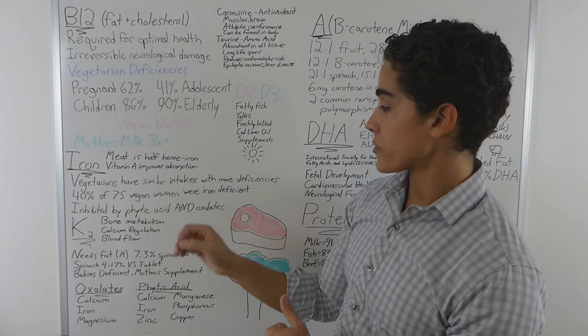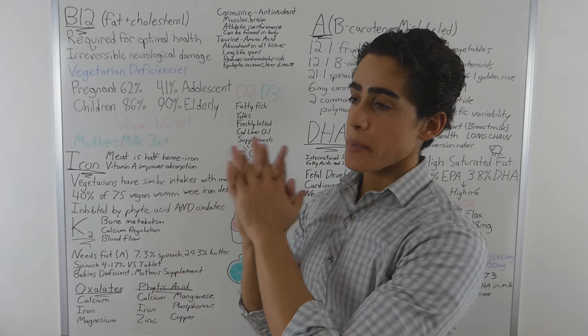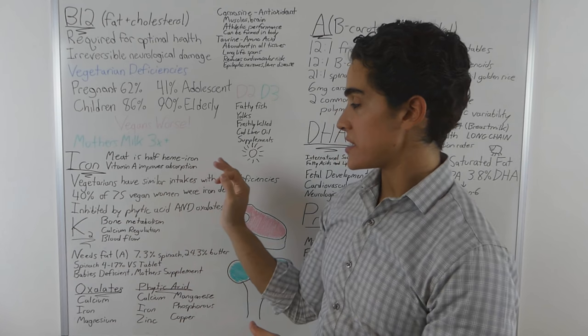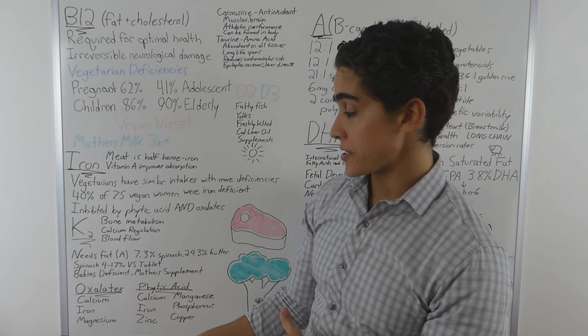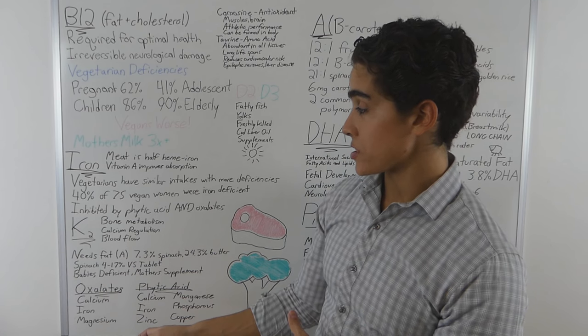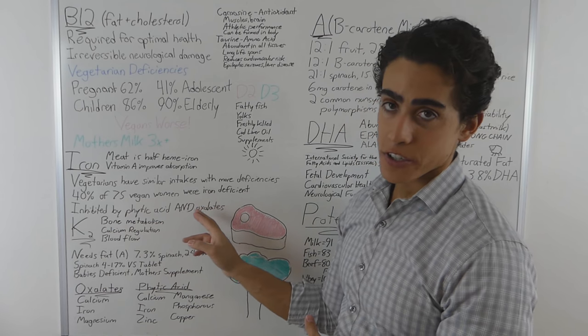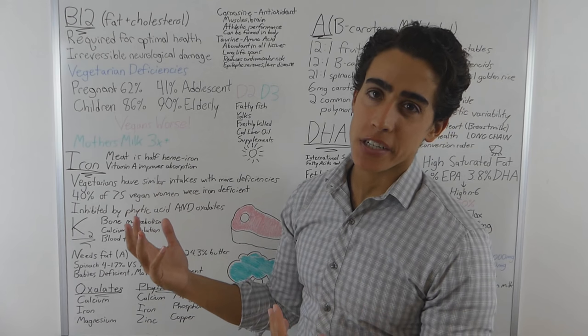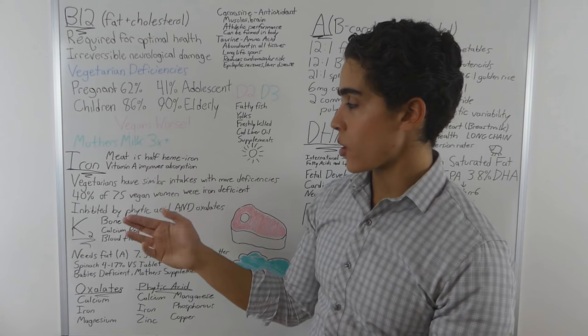Vegetarians have similar intakes with more deficiencies. On paper, same exact amount of heme iron, same exact amount of non-heme iron, they still get deficiencies. That's attributed directly to the anti-nutrients. These bind to minerals in the body and take them out. 40% of 75 vegan women were iron deficient. I believe that any vegan develops anemia over a period of time, if not incredibly low iron levels.